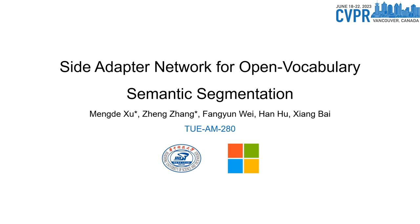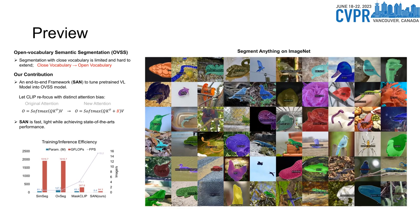Today we will introduce our paper, Sight Adapt Network for Open Vocabulary Semantic Segmentation. We mainly target Open Vocabulary Semantic Segmentation. We propose an end-to-end framework to adapt a pre-trained model into a segmentation model by directing the key features to focus on distinct areas. Our approach is fast, accurate, and only has a few trainable parameters. We evaluate our approach on multiple semantic segmentation benchmarks. Our method outperforms other counterparts with up to 18 times fewer trainable parameters and 19 times faster inference speed.